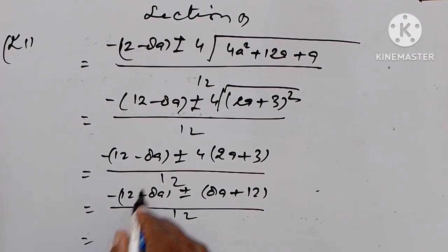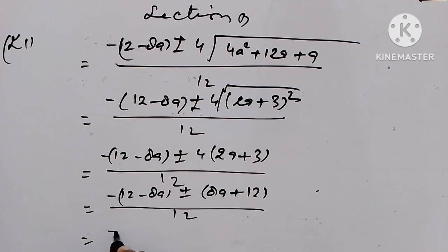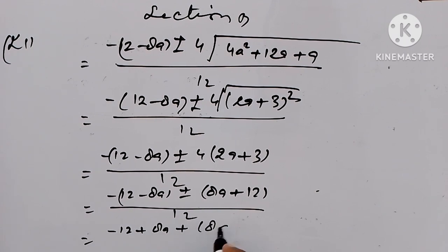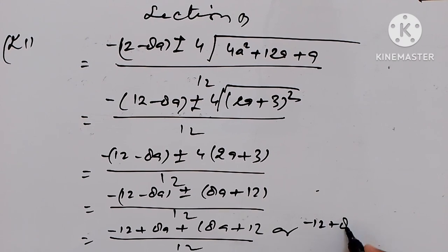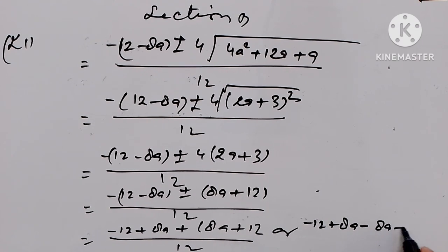Now we distribute this. We get: minus 12 plus 8a plus 8a plus 12, all upon 12, or minus 12 plus 8a minus 8a minus 12, all upon 12.